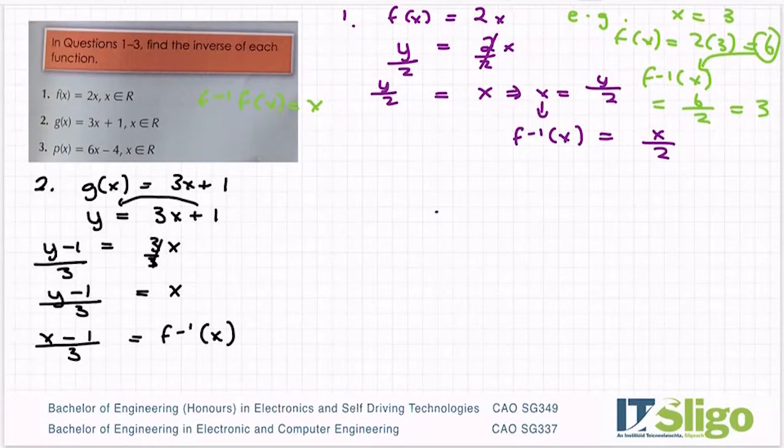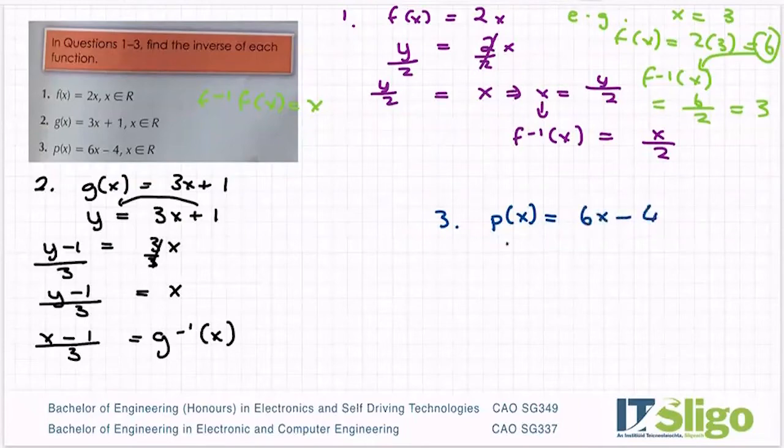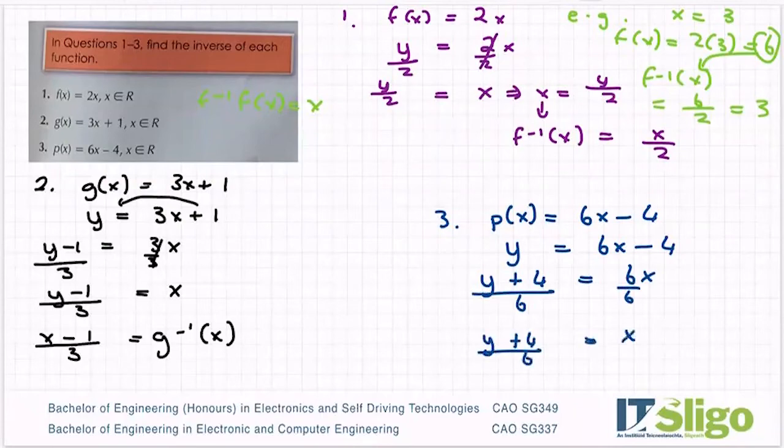Question 3 then. p(x). Of course, I shouldn't have called that g. g inverse of x. So p(x) then is equal to 6x minus 4. We label it as y. Write it in terms of x.